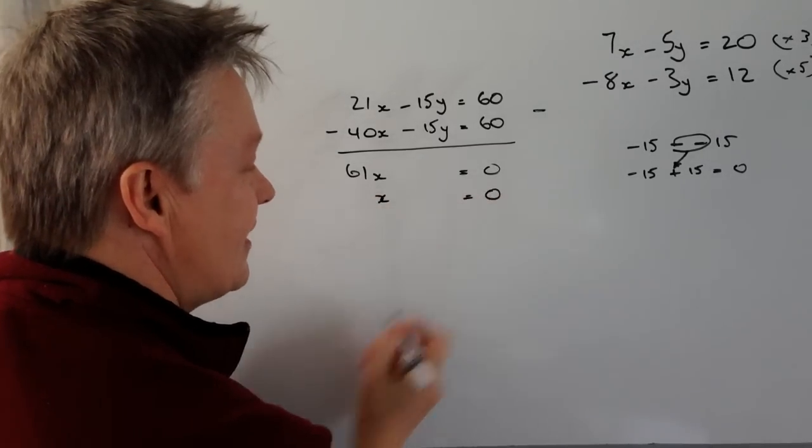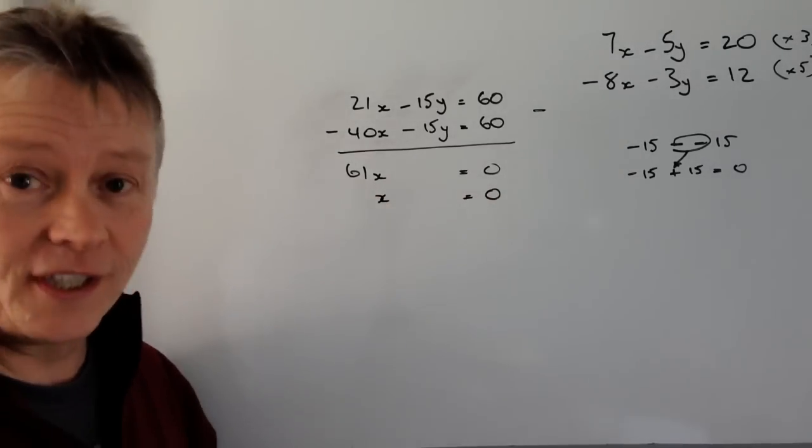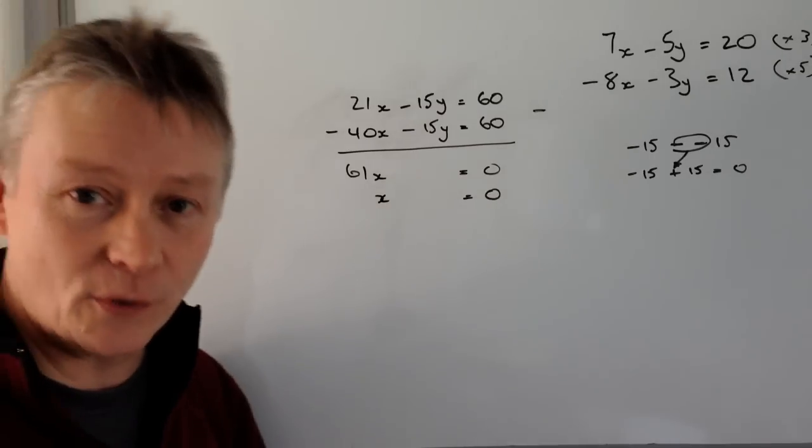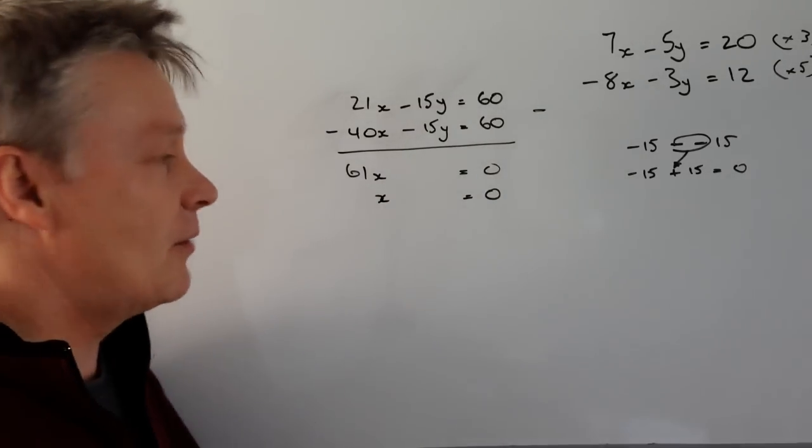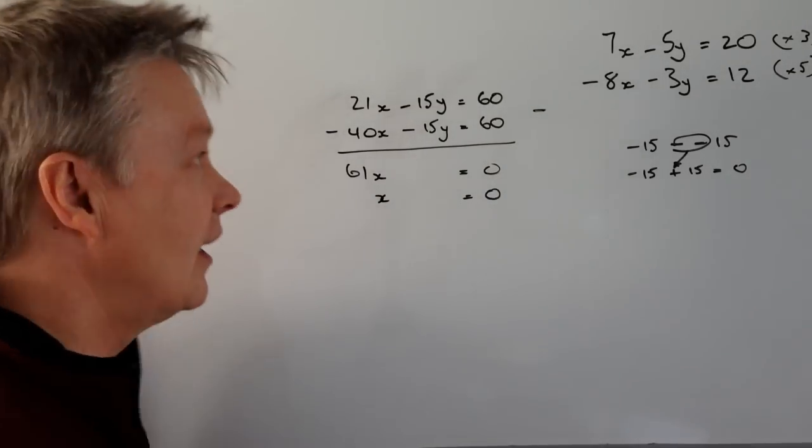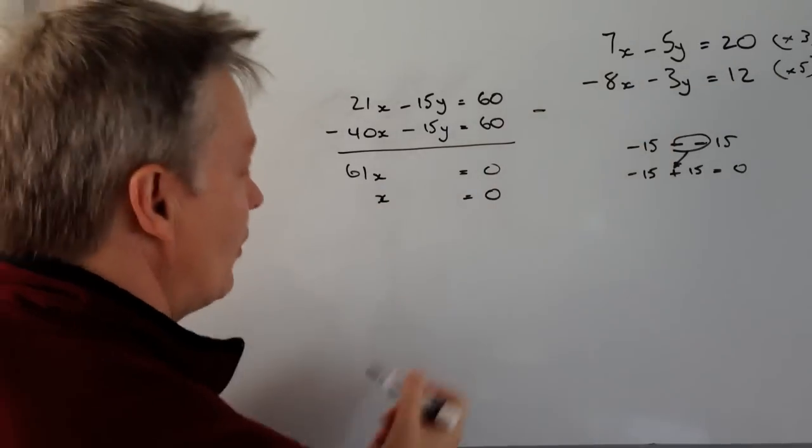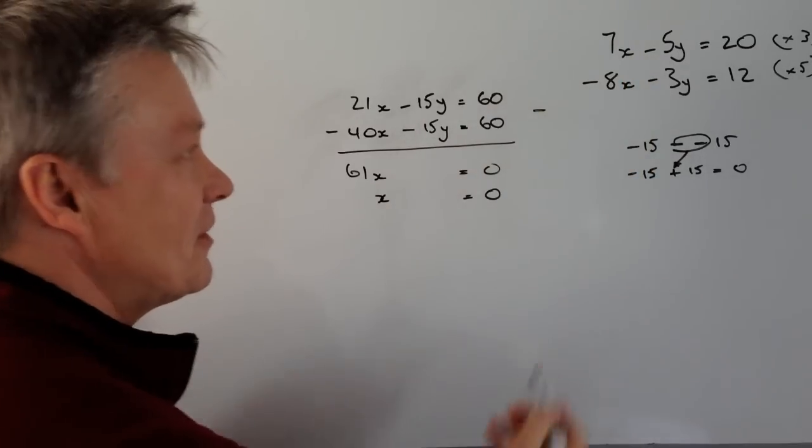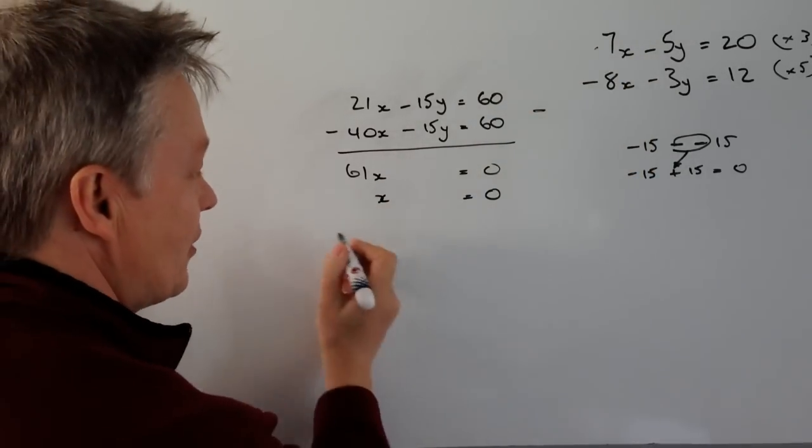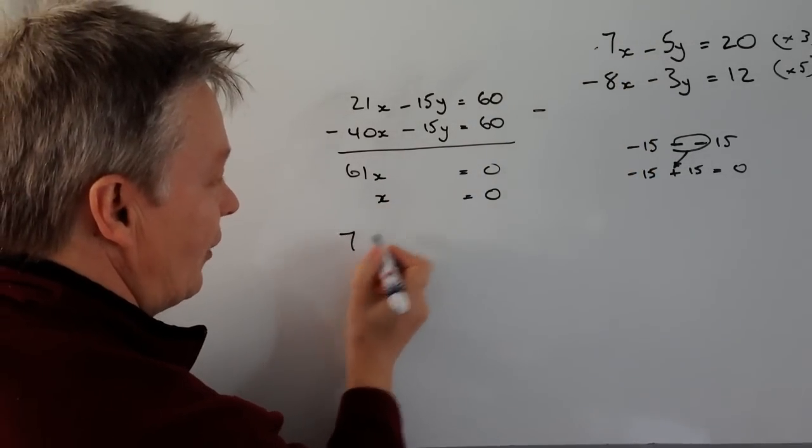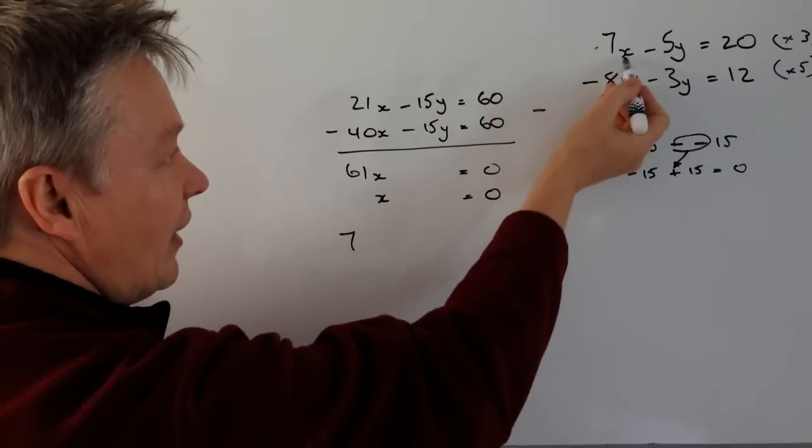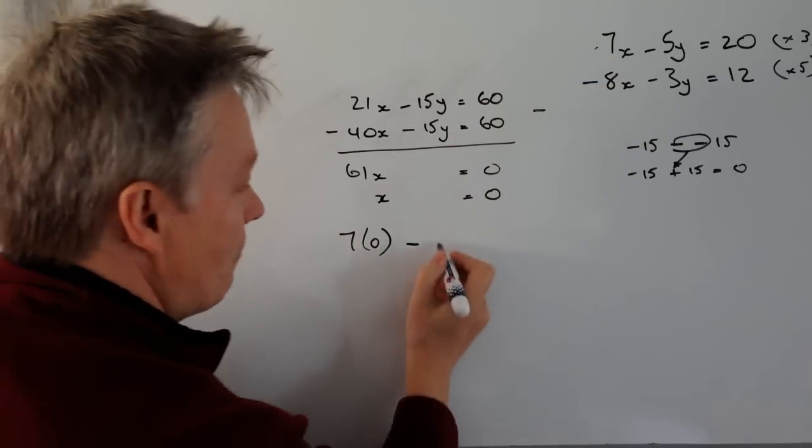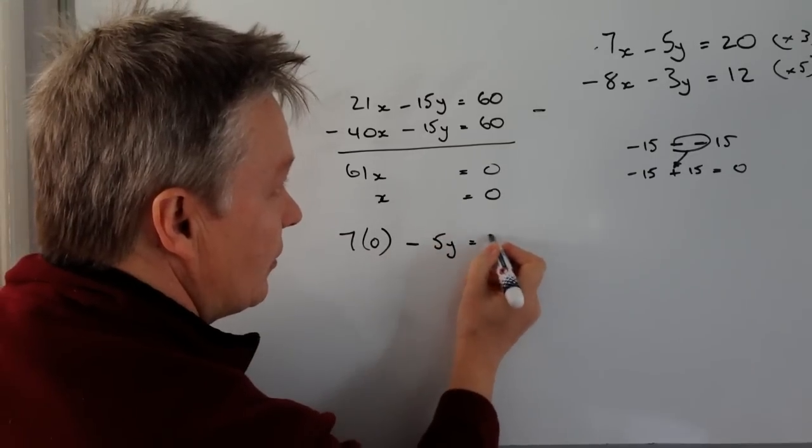And then really, it's just a case of taking that value of x and putting it back into one of these equations to be able to then work out the value of y. So we'll look at the top one. Doesn't really matter which one you choose. It's just it hasn't got as many negatives to deal with. So I'm going to choose this equation here. And I'm going to put this value of x as zero into the equation. So that becomes seven times zero minus 5y equals 20.